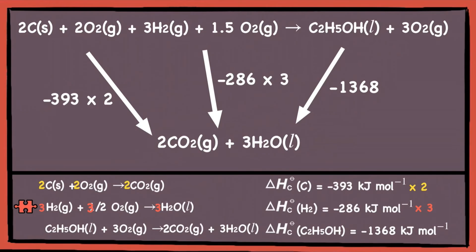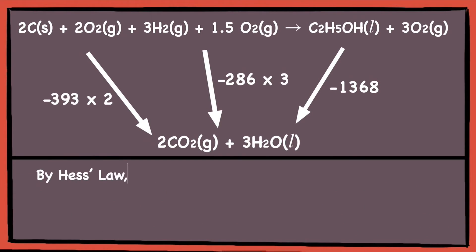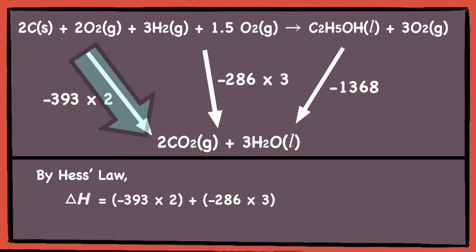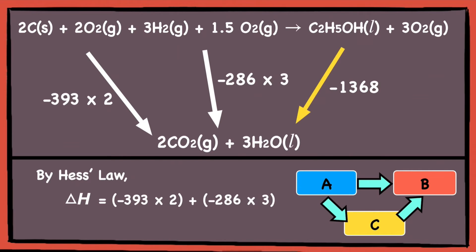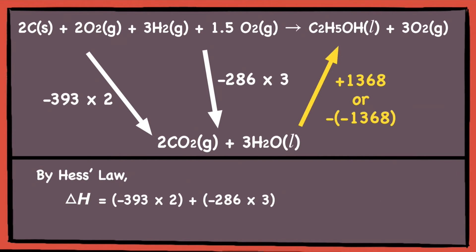We have successfully constructed the energy cycle, and now what's left is to answer the question by finding the enthalpy change of the main reaction. By Hess's law, the enthalpy change equals negative 393 times 2, plus negative 286 times 3. Because the energy cycle flows in an anti-clockwise direction and the arrow here opposes this flow, we reverse the sign by multiplying by negative, making it positive 1368. Adding positive 1368 gives a final answer of negative 276 kilojoules per mole.